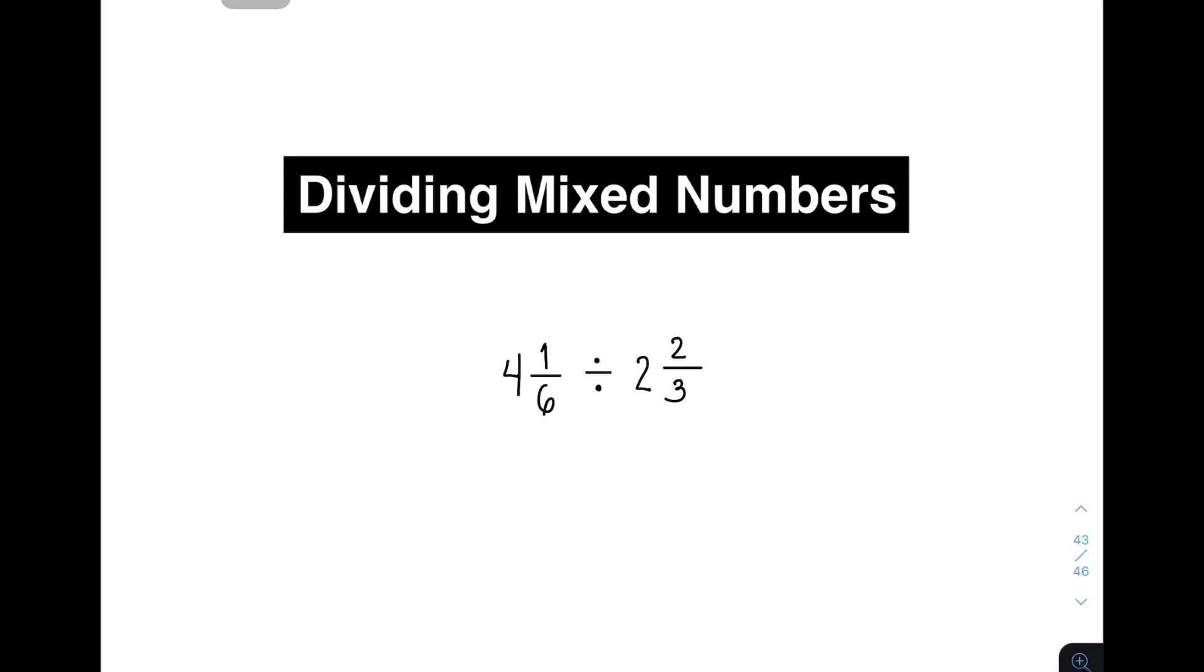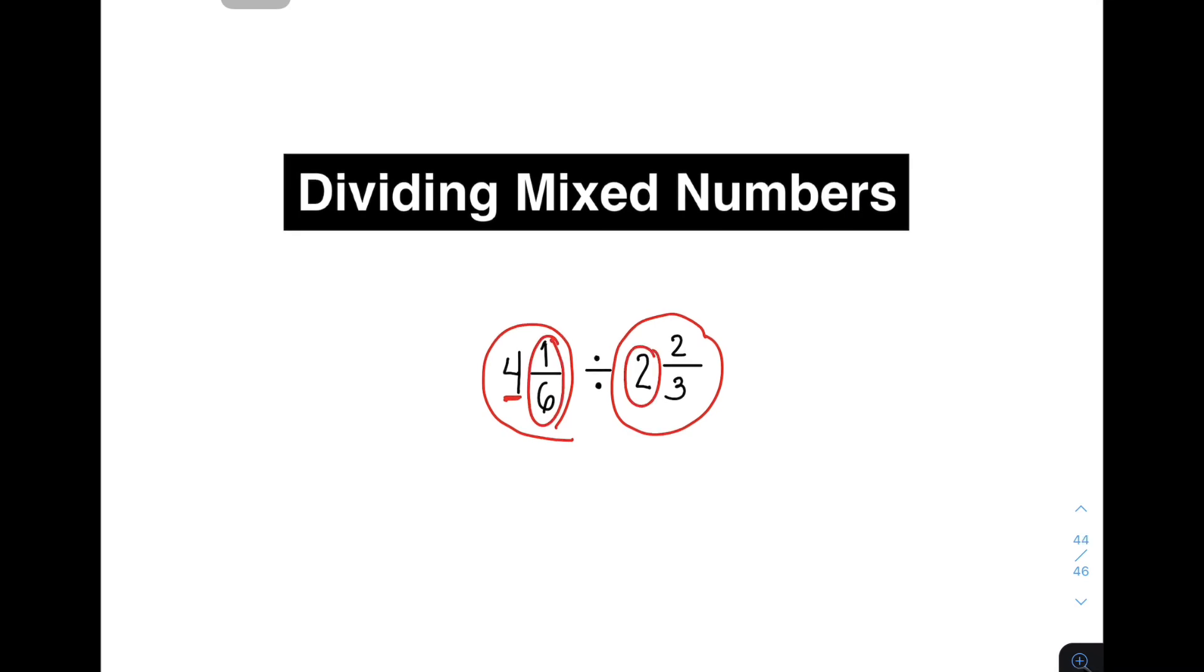So when you say mixed numbers, it is the combination of a whole number and a fraction. Ito yung mga examples natin ng mixed numbers. We have here 4 and 1 sixth. Tapos yung isa natin is 2 and 2 thirds. Itong dalawang ito ay puro mixed numbers lang. Bakit? Meron tayong combination ng whole number at ng fraction. Same with 2 and 2 thirds. Meron tayong whole number and a fraction.